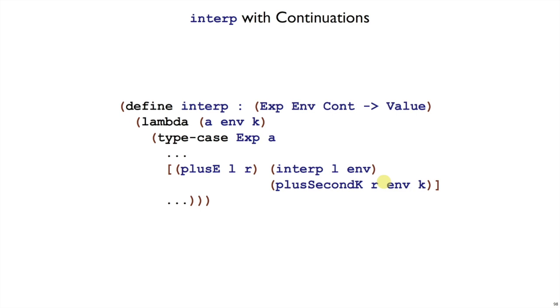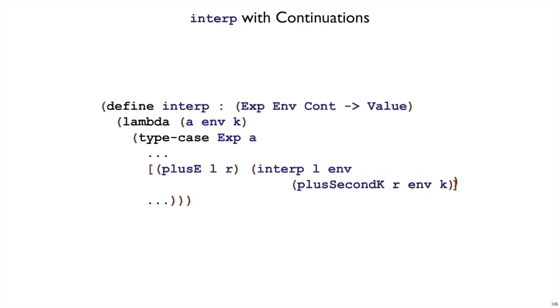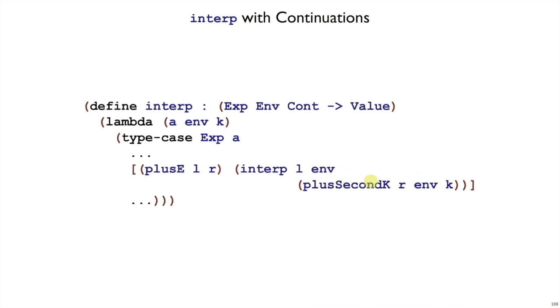So if we do that, that means plus second k is our new extended continuation. Where does it go? Well, at the same time, interp l inv needs to know, what is the to-do list? What should I do with the value k? So that's why we just need to move this parenthesis down here. We make this plus second k, this new continuation, to be the continuation that we pass into interp.